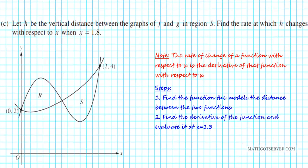Now let's take a look at part C. It says: let H be the vertical distance between graphs f and g in region S. Find the rate at which H changes with respect to x at x equals 1.8. Note that the rate of change of a function with respect to x is just another way of saying the derivative. The steps are: find the function modeling the vertical distance between f and g, which is f minus g; find the derivative of that function; and evaluate it at x equals 1.8.